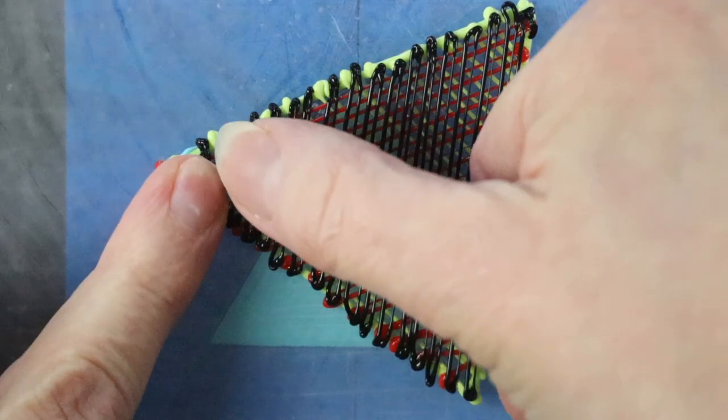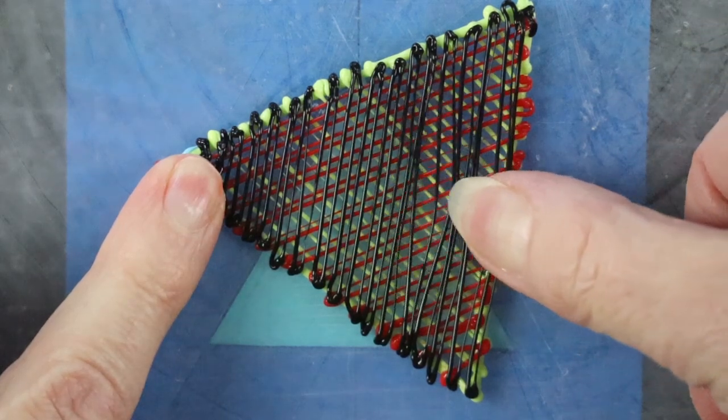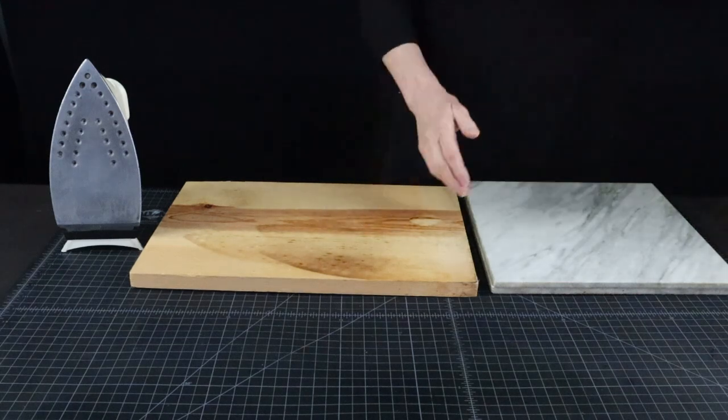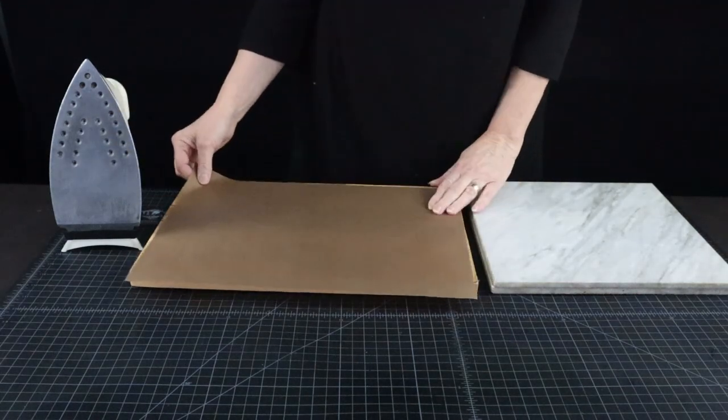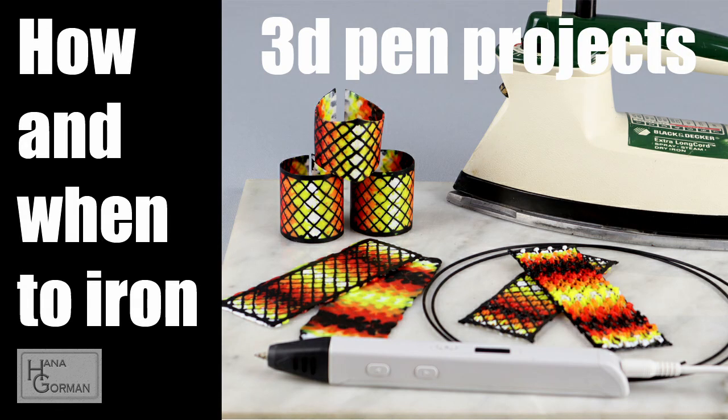Now, how do we get from here to a solid sheet? See, these strands are pretty flimsy, not even attached to each other. Let's start with ironing, because baking is a slightly different story. There is an ironing video linked in the description if you need to get the details.